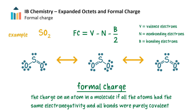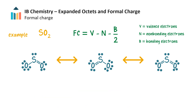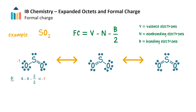We can use the equation FC = V − N − (B/2) to calculate the formal charge on an atom in a molecule, where V is the number of valence electrons on that atom, N the number of non-bonding valence electrons, and B the number of electrons shared in bonds. Let's calculate the formal charge for the left-most structure, starting with oxygen. This oxygen atom has 6 valence electrons, 6 non-bonding electrons in 3 lone pairs, and 2 shared bonding electrons in its bond, giving a formal charge of −1. A similar calculation gives a formal charge of +1 for sulfur and 0 for the oxygen on the right.